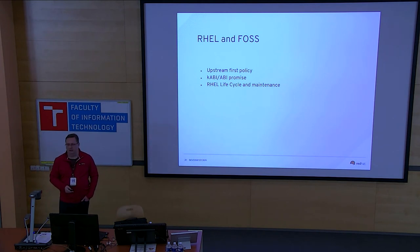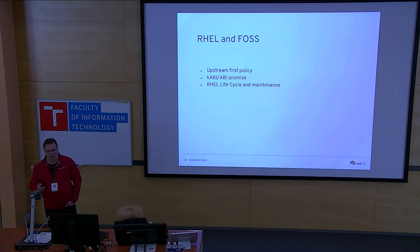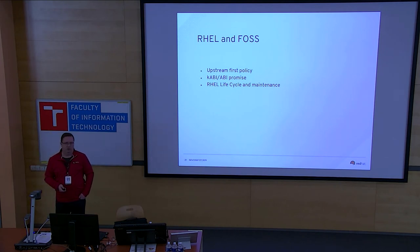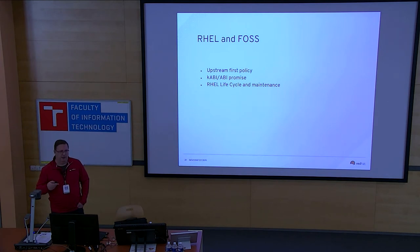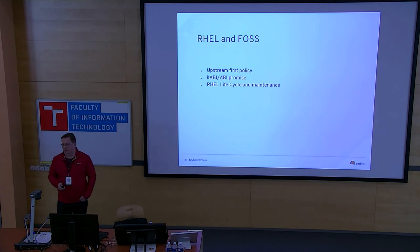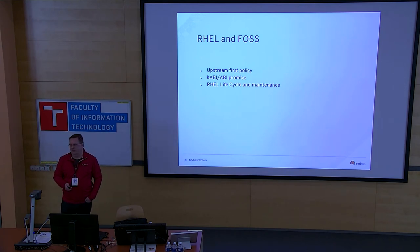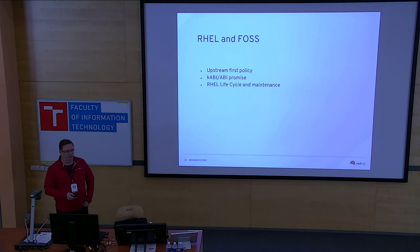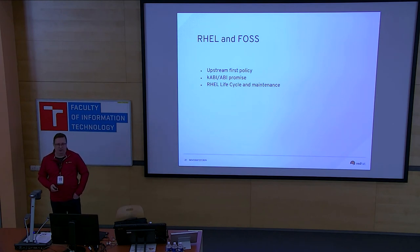Another piece that hits us pretty significantly is the kernel ABI and user space ABI promise. We basically promise our customers that if you compile something on RHEL 7.1, it will run on 7.2, 7.3, for a specific list of system calls or library calls. There aren't too many upstreams that actually think about anything like that, which means we have to put a lot of effort into making sure nothing breaks as we use newer and newer versions of packages. Some libraries like glibc do miracles with their versioning mechanisms, but elsewhere it can be a lot of work.